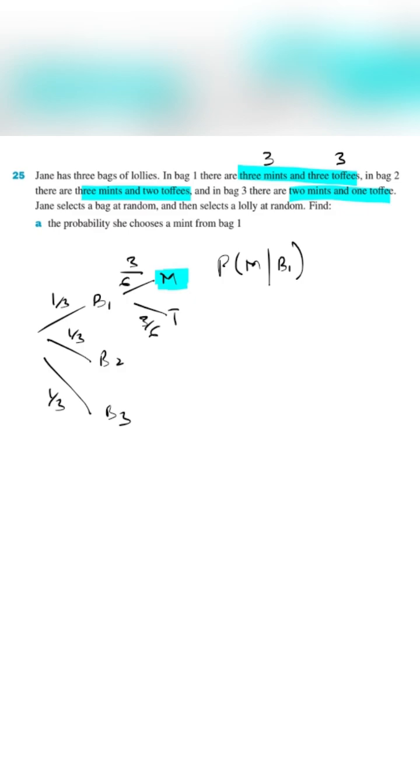Now let's come back to the question where we wanted to find the probability that Jane chooses a mint from bag one. And mathematically, we can write this thing as probability of mint intersection bag one. And from the multiplication rule of probability, this is equal to probability of bag one multiplied by probability of M given bag one, essentially the product of this whole branch. So the probability of bag one is 1 over 3 and the probability of mint given bag one is 3 over 6. So we can say that the probability that Jane chooses a mint from bag one is 1 over 6.